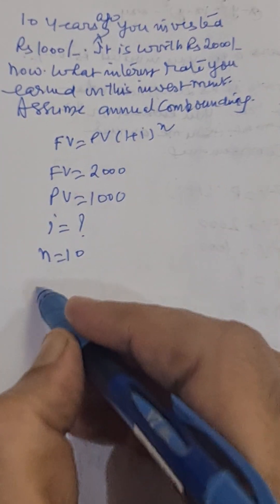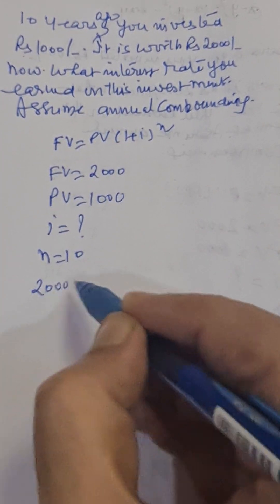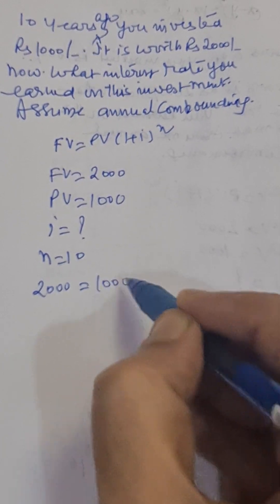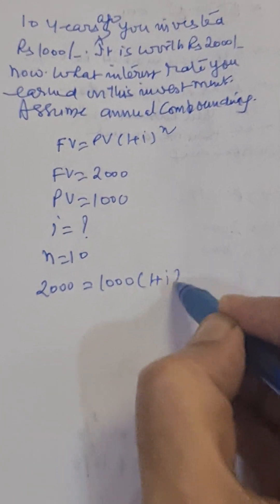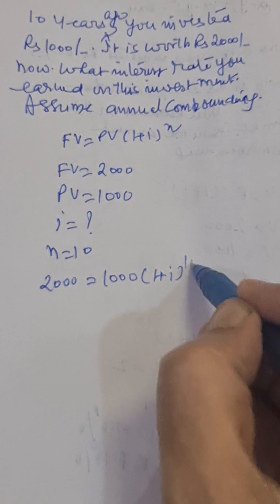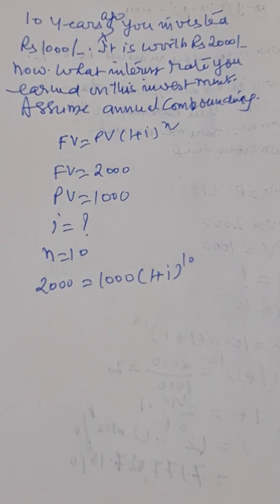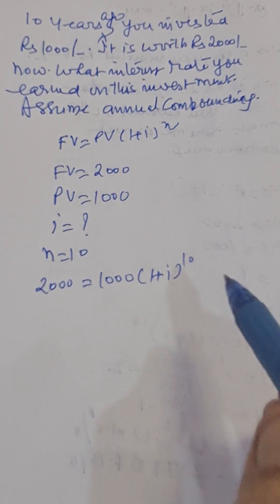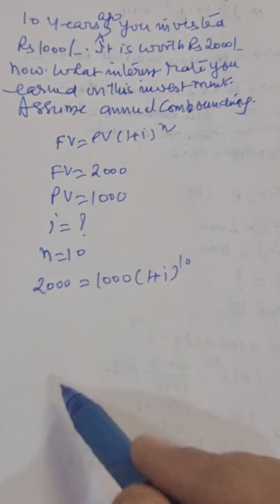We put these values in this formula we get two thousand equal to one thousand one plus I raise to the power ten. So we have to evaluate this I in this equation.